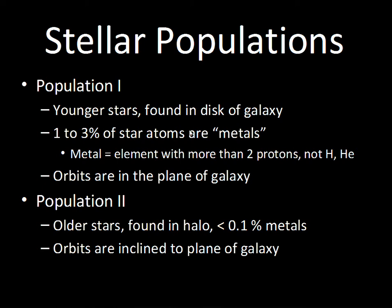In Population I stars, which are more recently formed, one to three percent of the material consists of metals. Population I stars are found in the plane of the galaxy where the spiral arms are located. Population II stars are not restricted to the plane — they're found in the halo, a big spherical distribution around the center of the Milky Way. They are poor in metals — primarily just hydrogen and helium, with only about 0.1 percent or less of heavy elements. Population II is older; Population I is younger and enriched with elements heavier than helium.